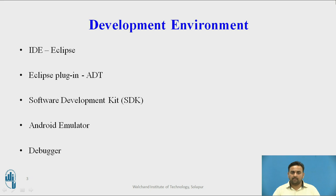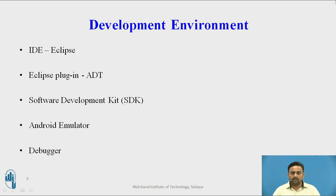Next is the SDK — the Software Development Kit. The Android SDK provides certain tools for Android application development, such as DDMS which is the Dalvik Debug Monitor System, Monkey, ProGuard, TraceView, ZipAlign, JarSigner. These are some of the tools provided by the SDK.